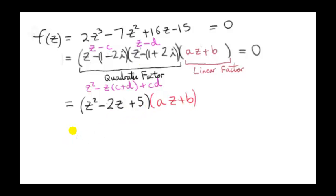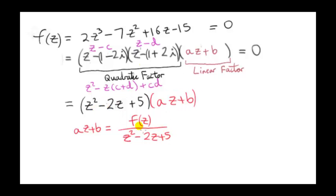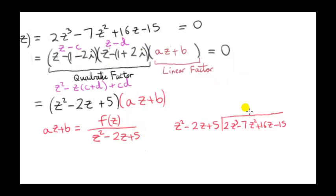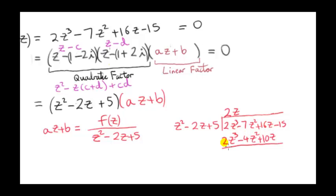Now let's find az plus b, the linear factor. We take f of z, the cubic, and divide by this quadratic z squared minus 2z plus 5. So we do long division. We take z squared and divide it into 2z cubed to get 2z. After dividing, we multiply 2z by all of the quadratic, getting 2z cubed minus 4z squared plus 10z. The next step is to subtract this from the cubic. These cancel out, and minus 7 minus minus 4 gives minus 3, and 16 minus 10 gives 6.